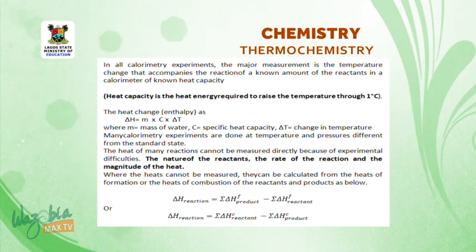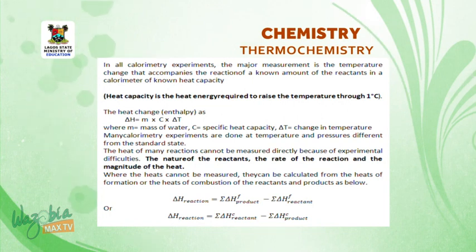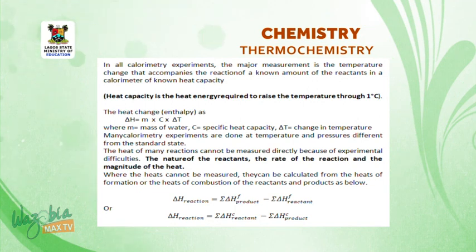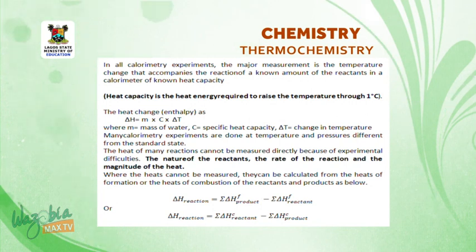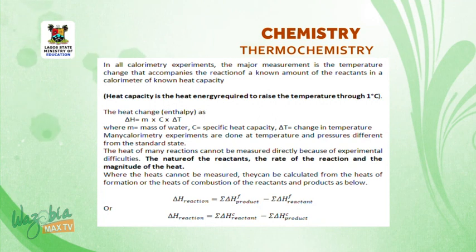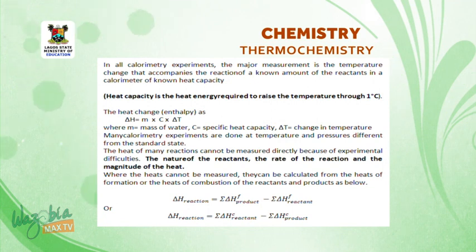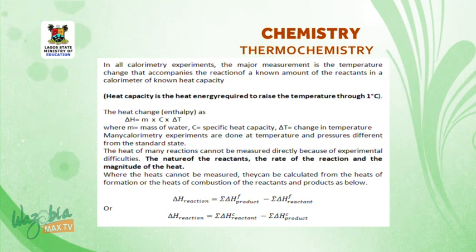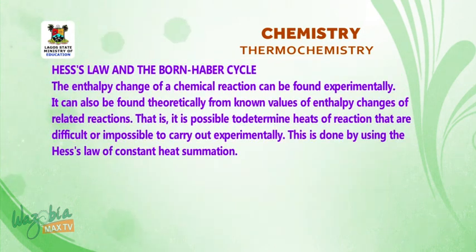The heat of many reactions cannot be measured directly because of experimental difficulties such as the nature of the reactants, the rate of reaction, and the magnitude of the heat. Where heat cannot be measured directly, it can be calculated from the heat of formation or the heat of combustion of the reactants and products. Heat of reaction in terms of heat of formation is: delta H equals summation of heat of formation of products minus summation of heat of formation of reactants. Alternatively, it can be found using heat of combustion, Hess's law, and the Born-Haber circle.